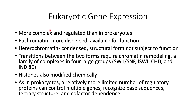In eukaryotic gene expression, this is more complex and regulated than in prokaryotes. Euchromatin is more dispersed and available for function, while heterochromatin is condensed and not subject to function. Transitions between heterochromatin and euchromatin require chromatin remodeling, which is a family of complexes in four large groups: SWI/SNF, ISW1, CHD, and INO80.